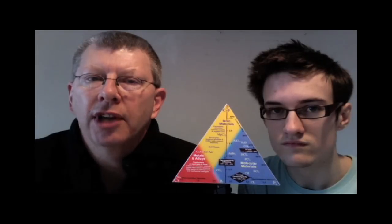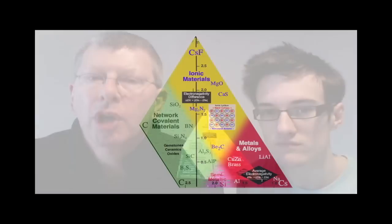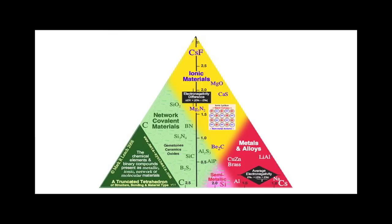And we can rotate the tetrahedron, and we can see how there's a corner cut off. On this side, we can see the corner in red with caesium. At the top, in yellow, we can see caesium fluoride, and then we can quite clearly see the cut off corner with carbon at 2.55. So this gives us a truncated tetrahedron of structure, bonding, and material type.